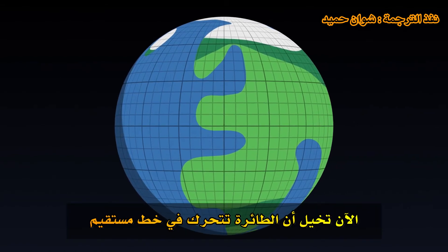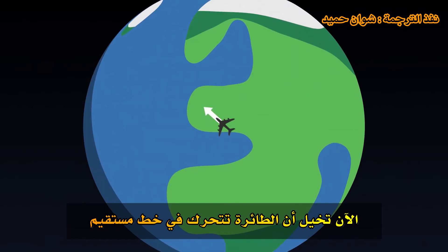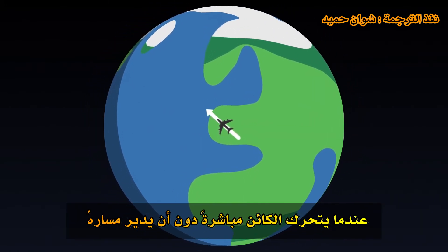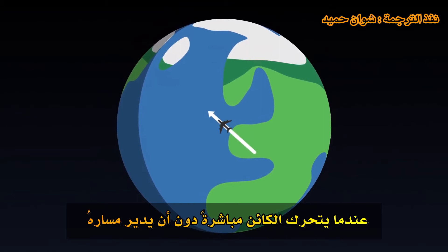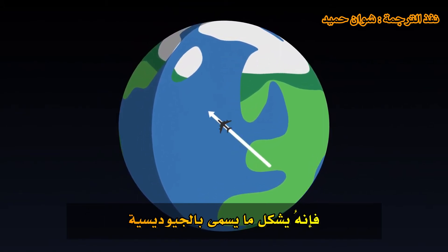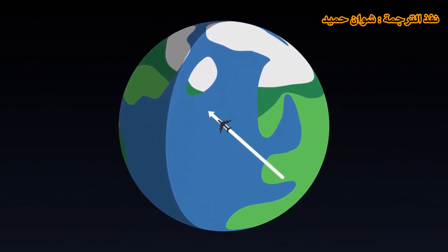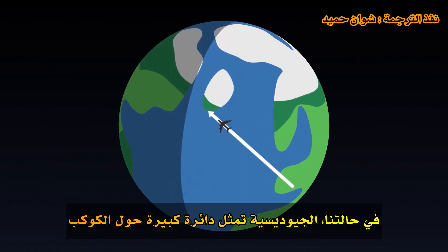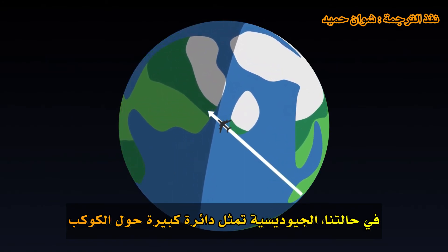Now imagine that an airplane is moving in a straight line. When an object moves straight ahead without ever turning, its trajectory forms what is called a geodesic. In our situation, the geodesic is a great circle around the planet.